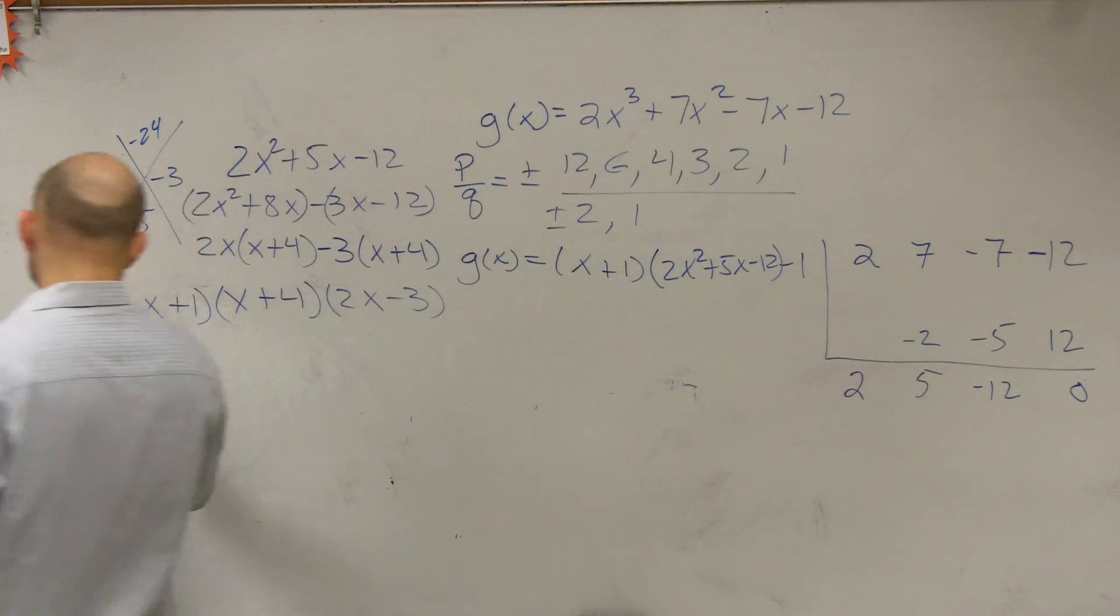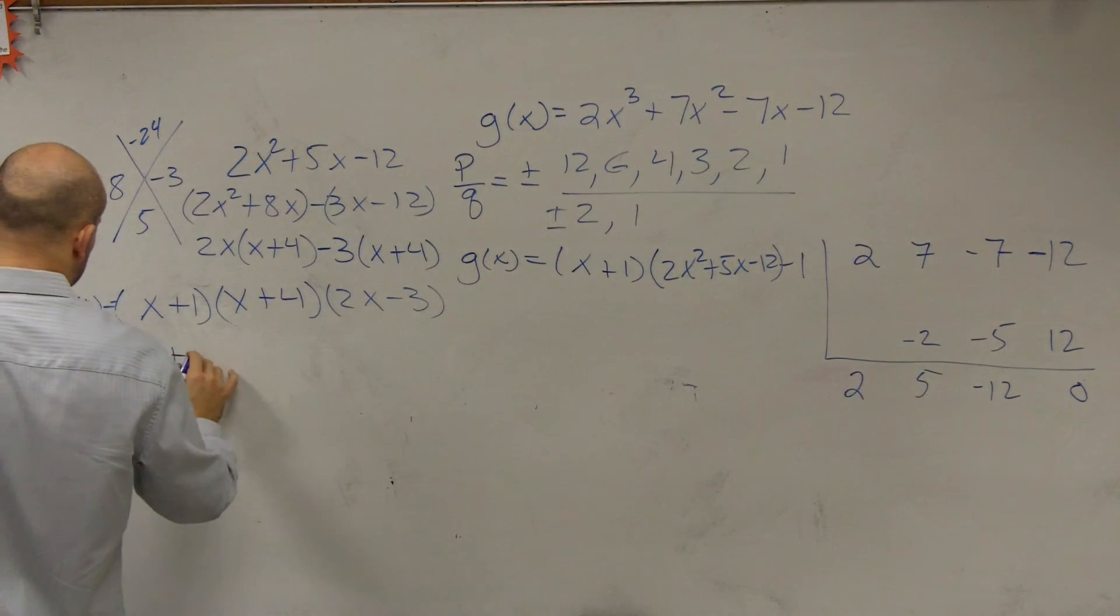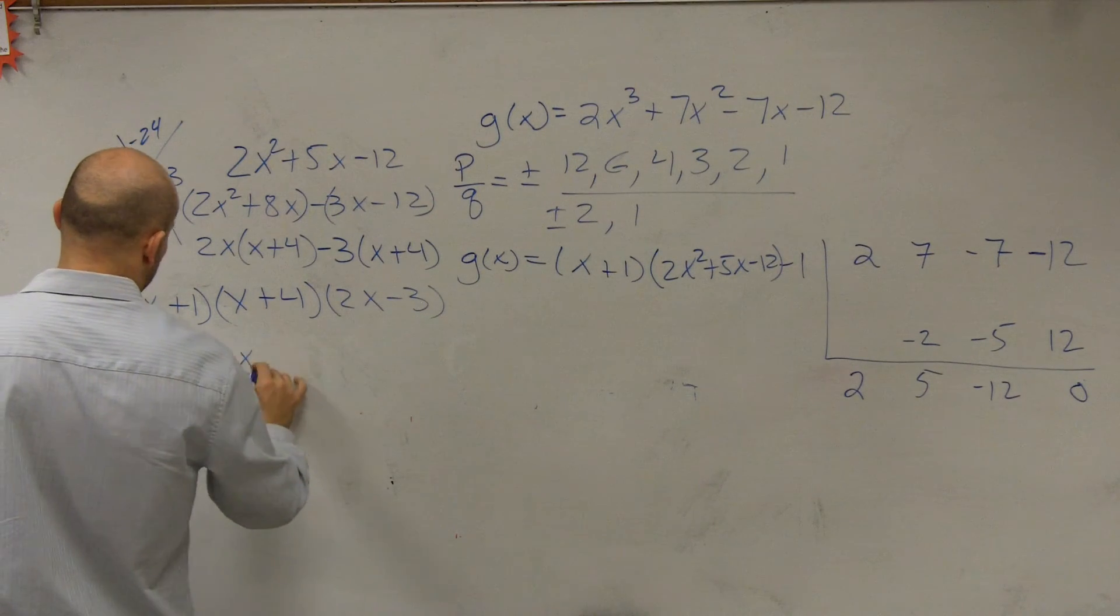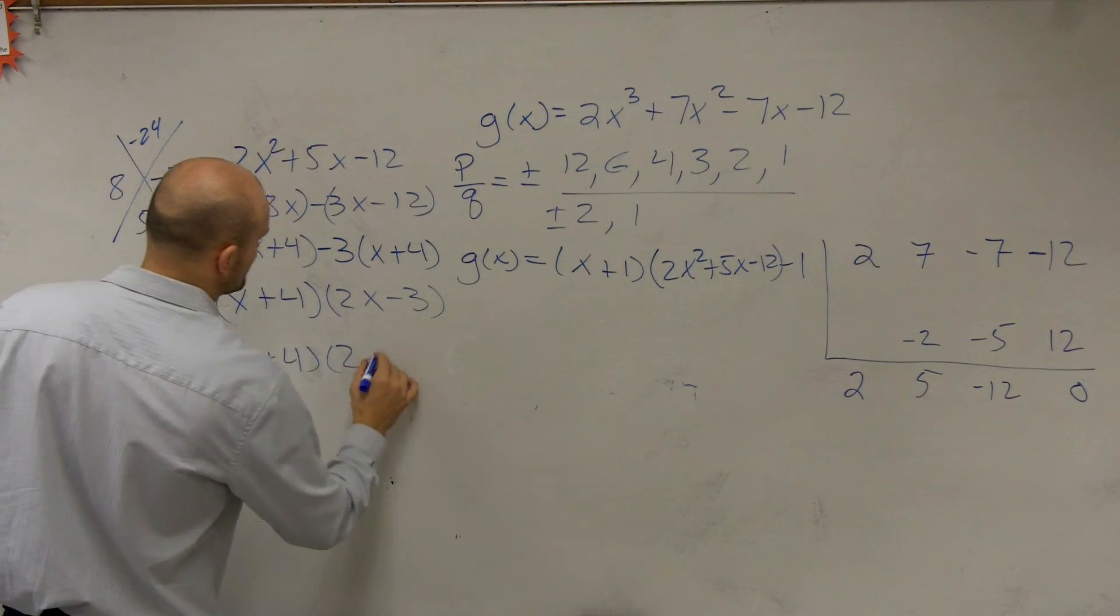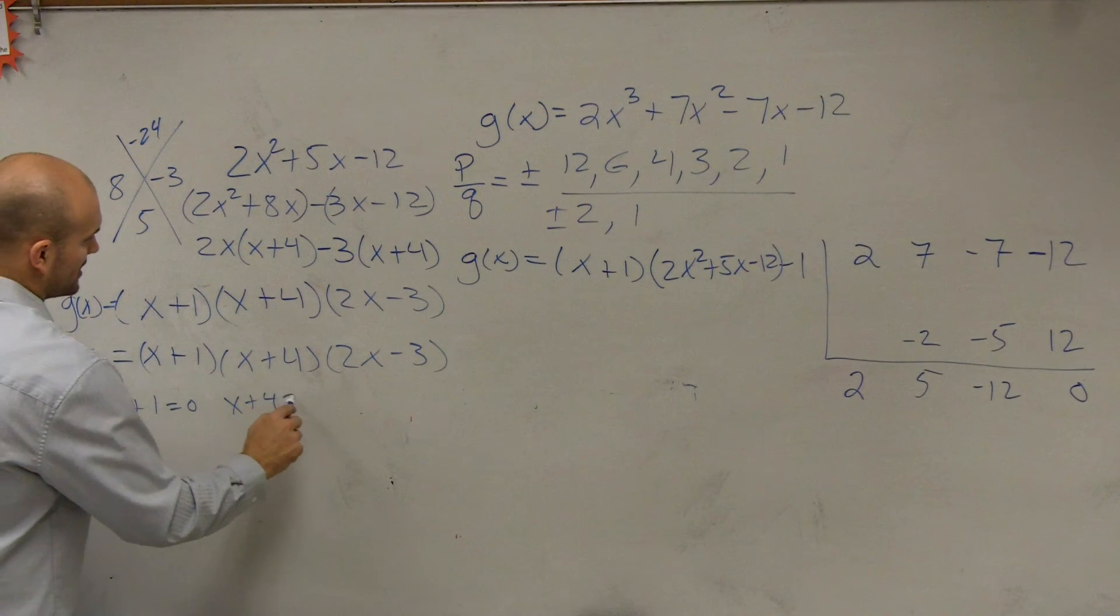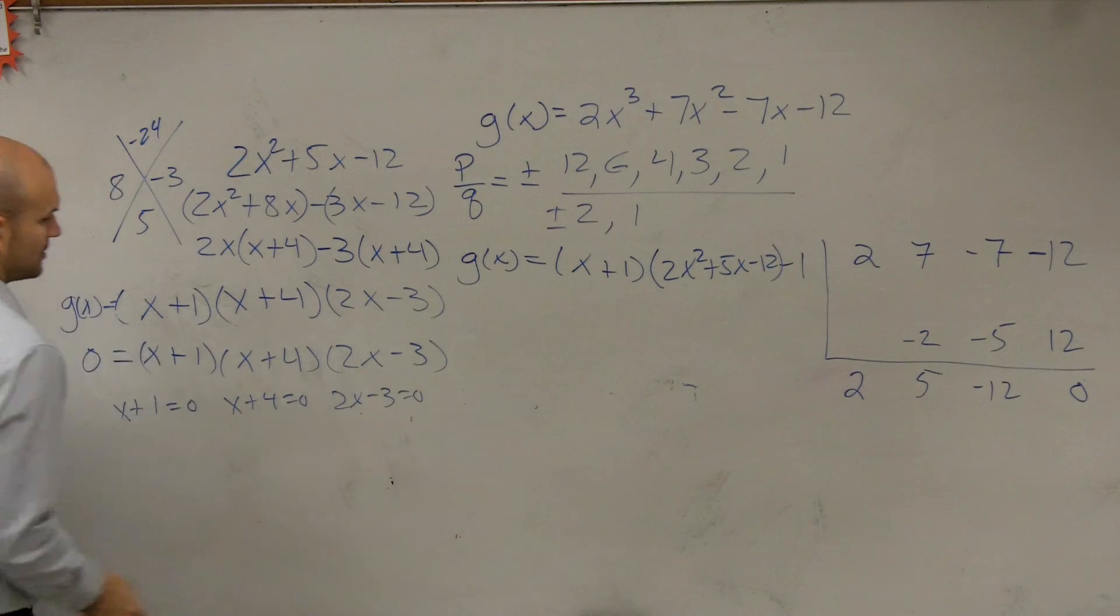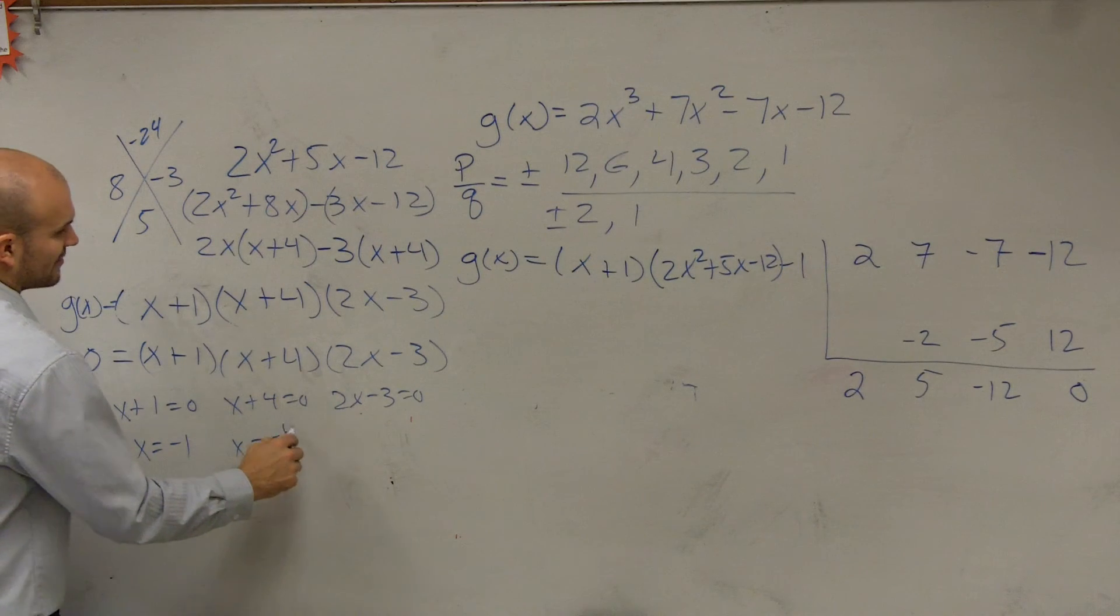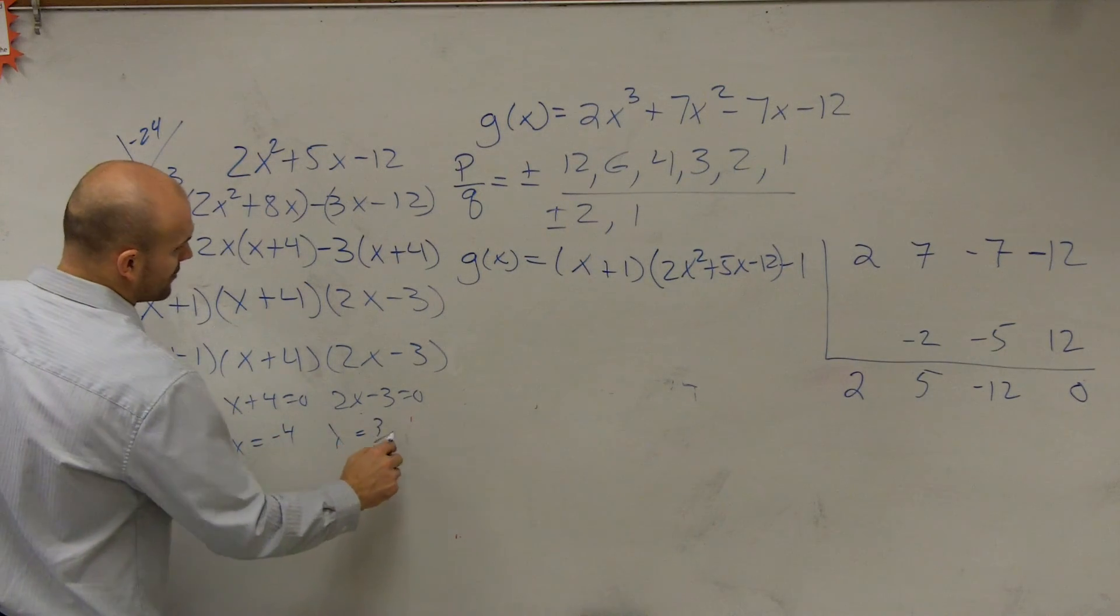Now, you set this equal to zero, and you say x plus 1 times x plus 4 times 2x minus 3. So therefore, you could say x plus 1 equals zero, x plus 4 equals zero, and 2x minus 3 equals zero. Therefore, x equals negative 1, x equals negative 4, and x equals 3 halves.